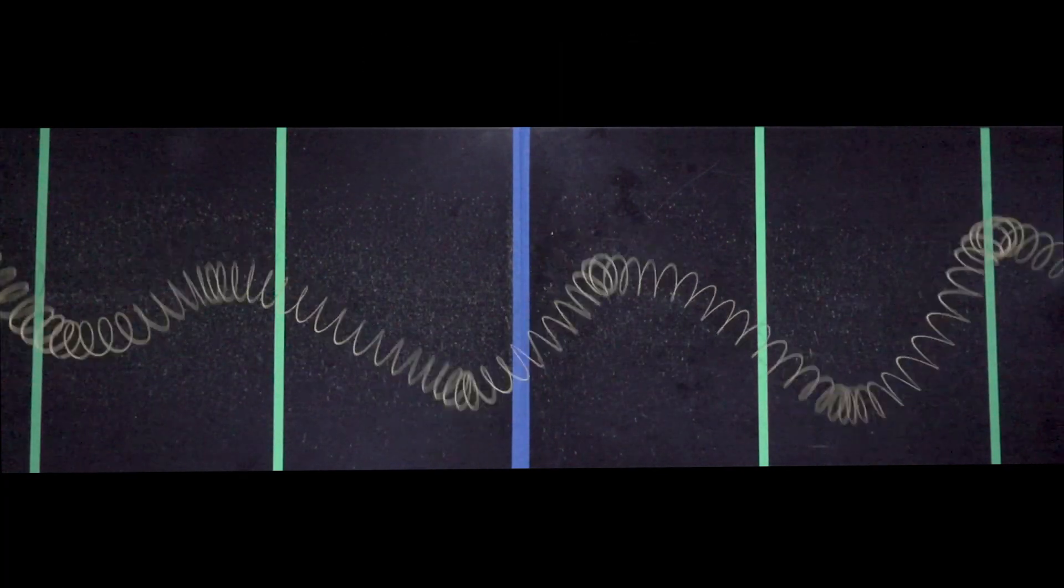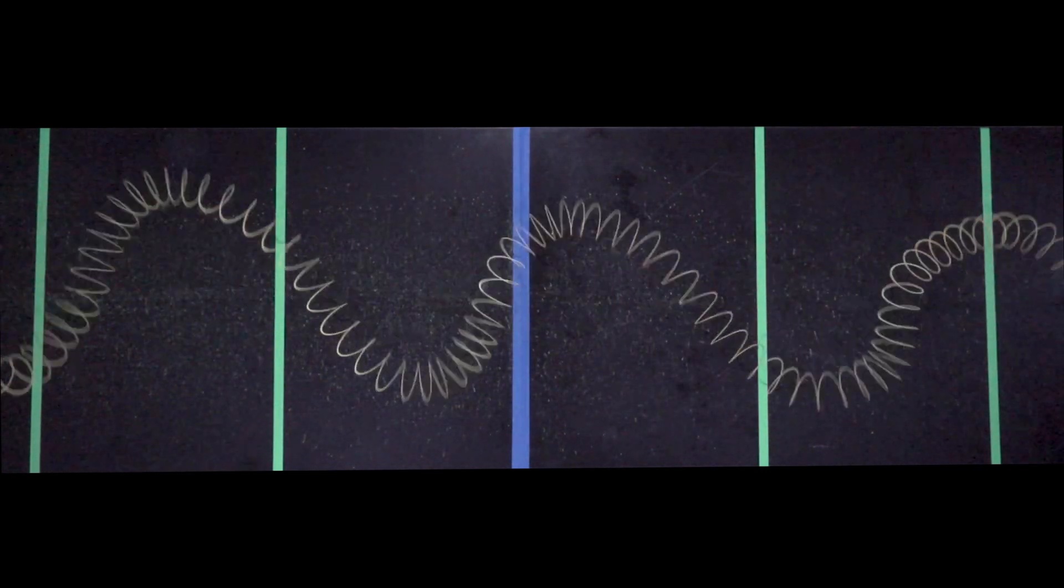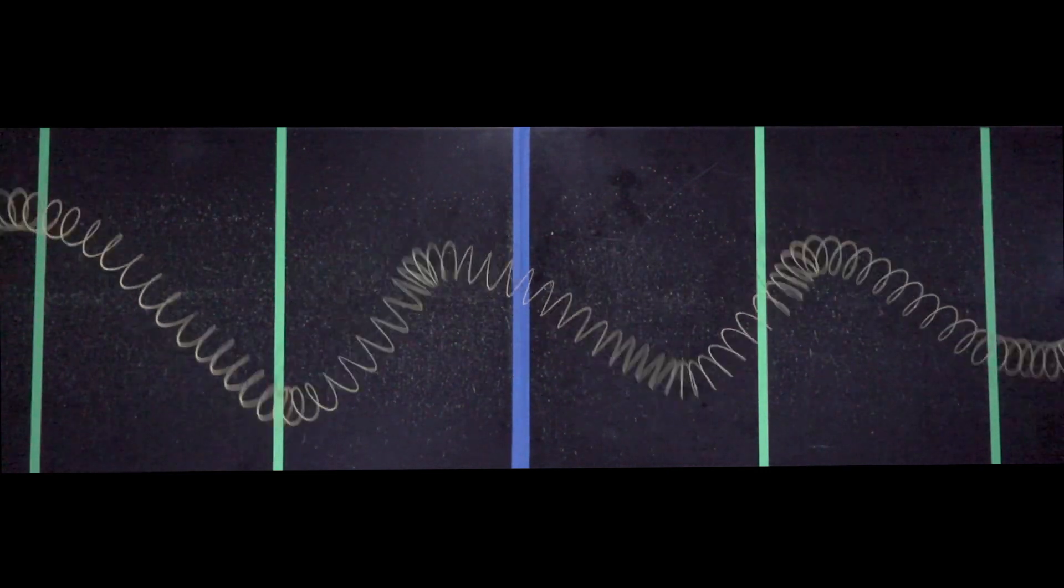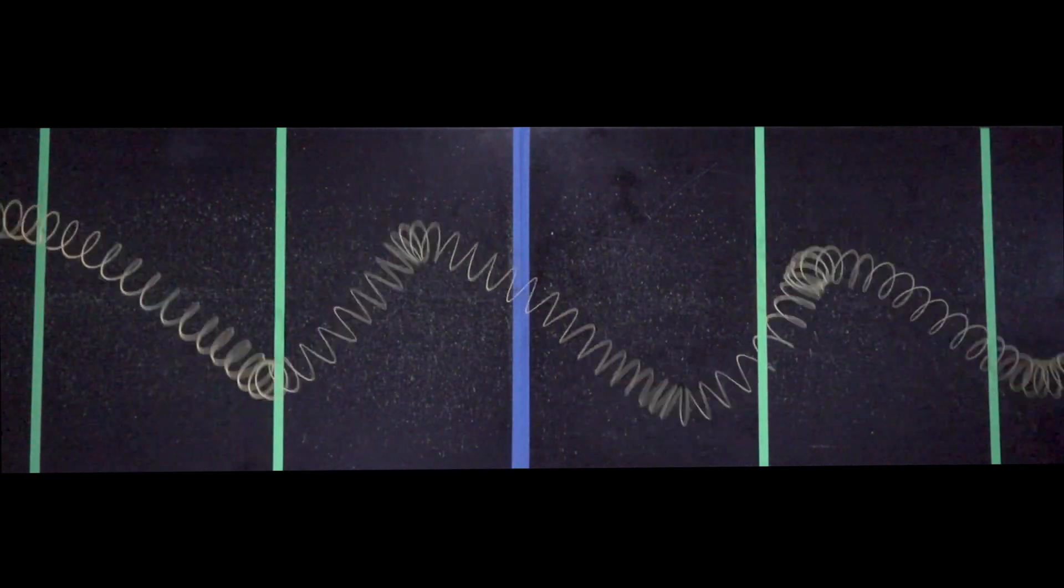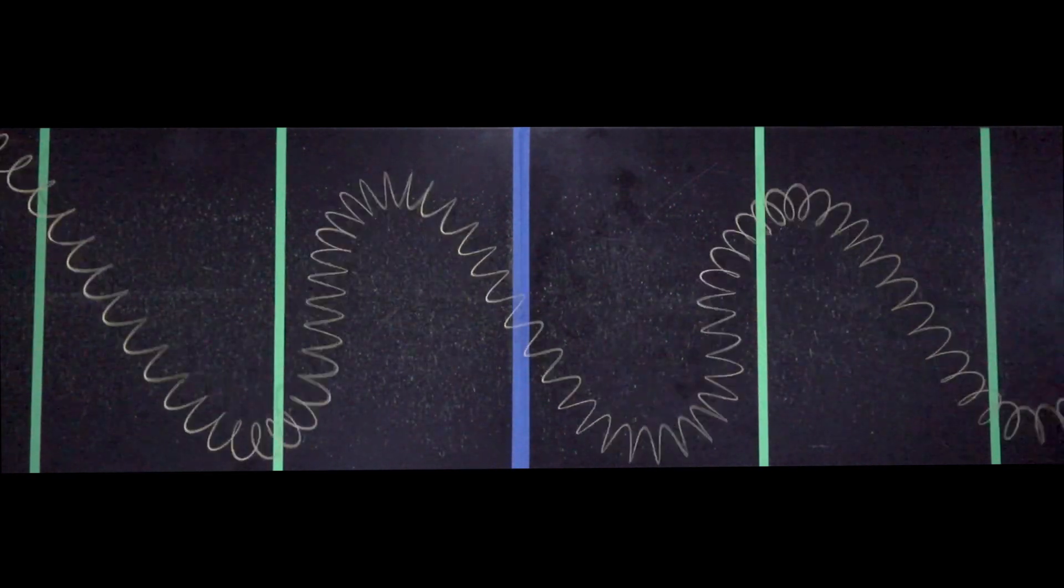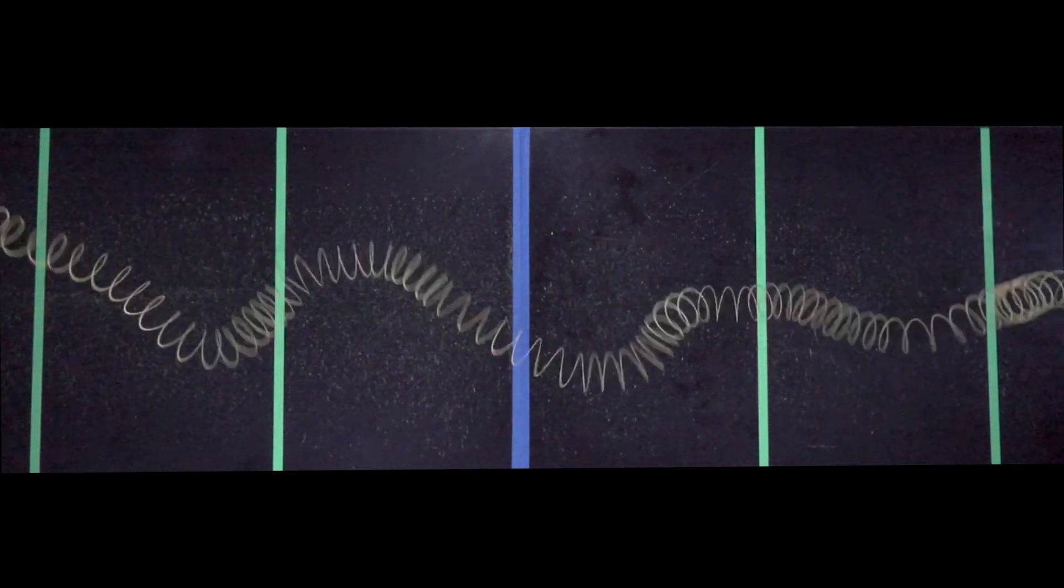When two traveling waves of equal amplitude and frequency are moving in opposite directions, they interfere. In some locations they interfere constructively and in others they destructively interfere. This pattern appears to stand still in space. These are called standing waves.